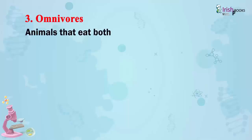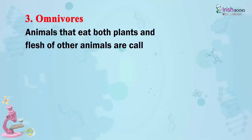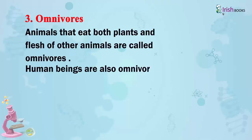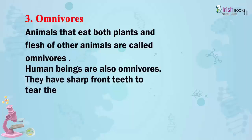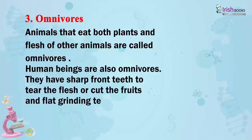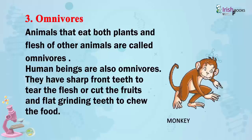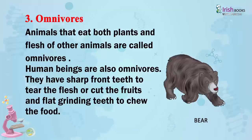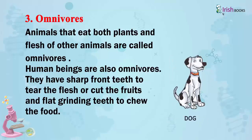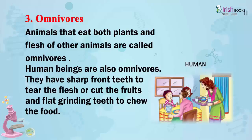Omnivores. Animals that eat both plants and flesh of other animals are called omnivores. Human beings are also omnivores. They have sharp front teeth to tear the flesh or cut the fruits, and flat grinding teeth to chew the food.